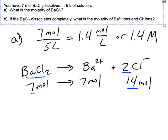So anyway, those concentrations, the Ba²⁺ is essentially going to be 7 over 5 or 1.4 as well. And the Cl⁻ is going to be 14 over 5 or 2.8 molar.